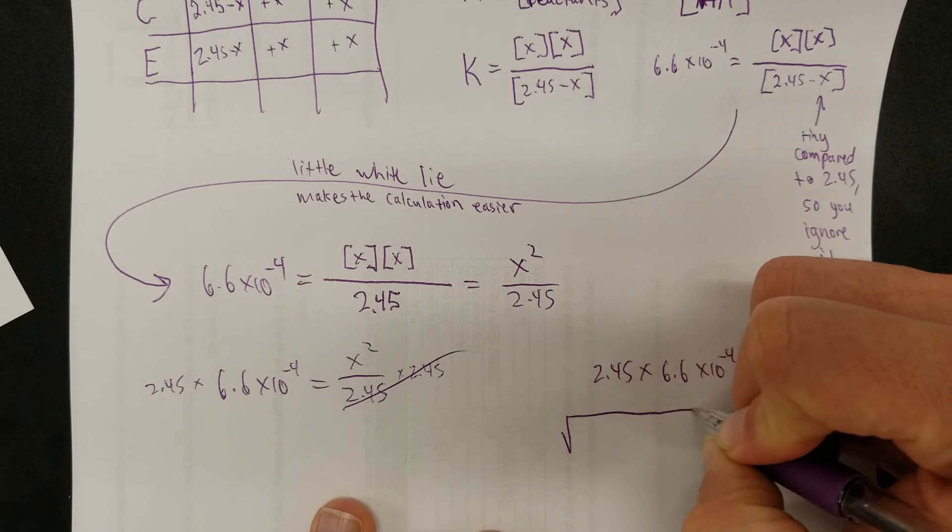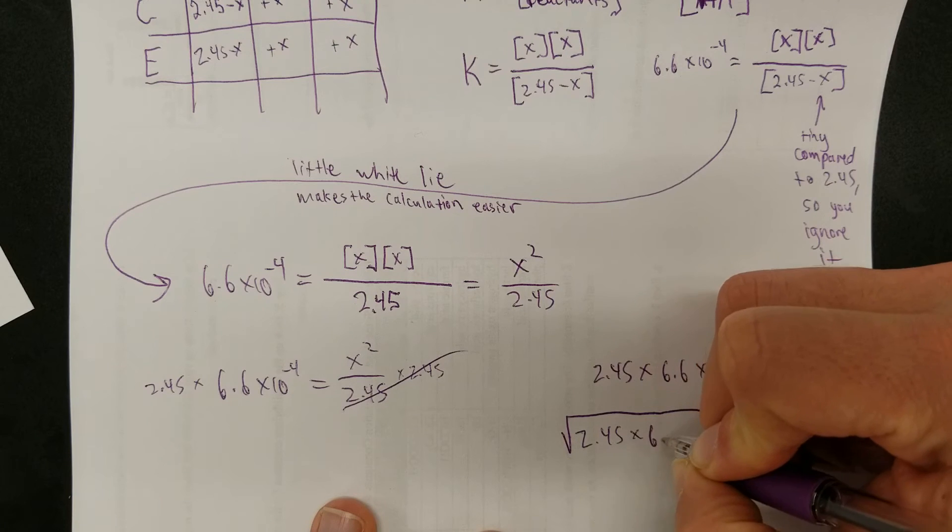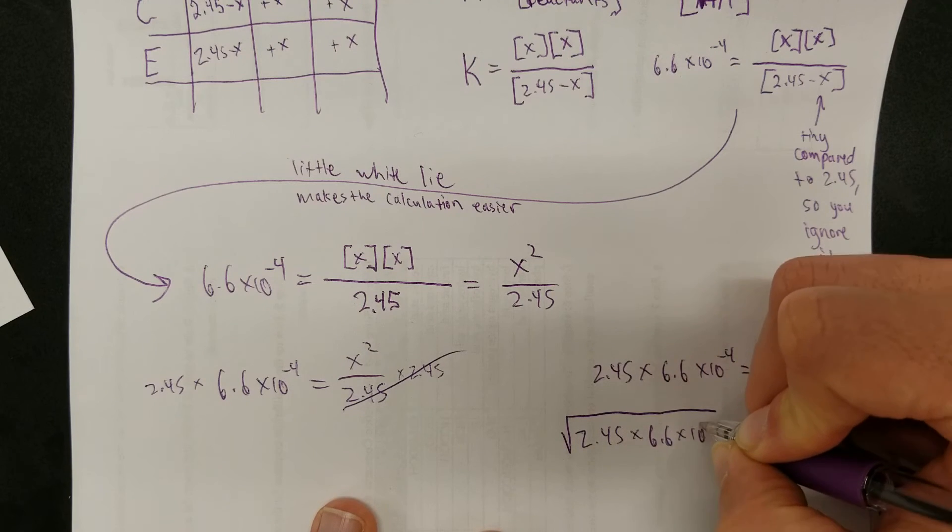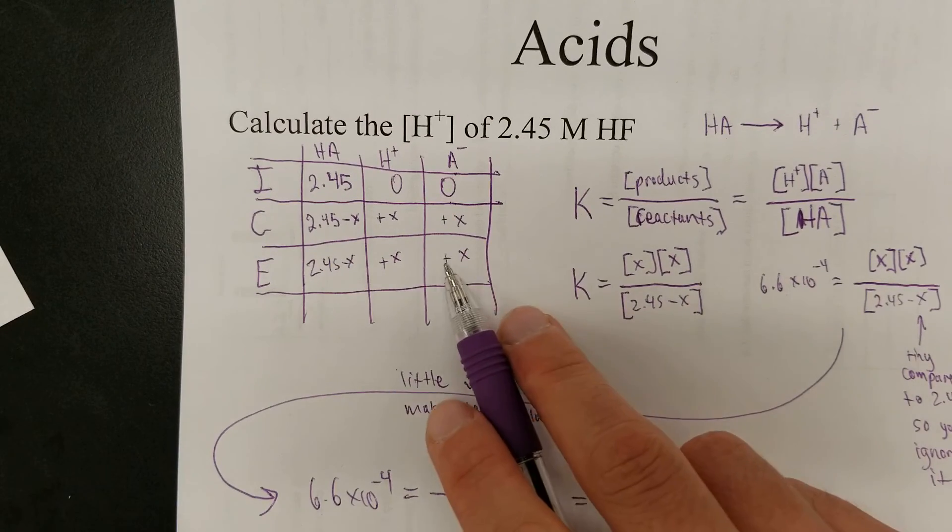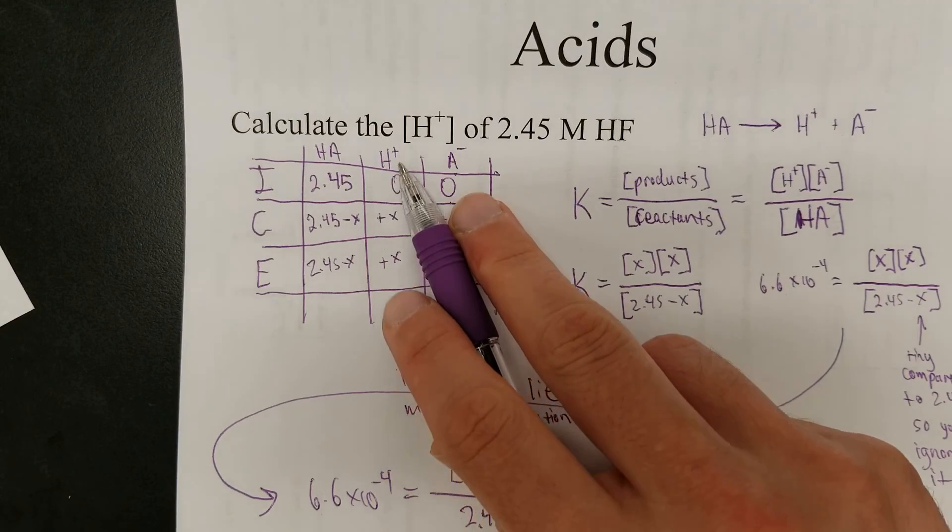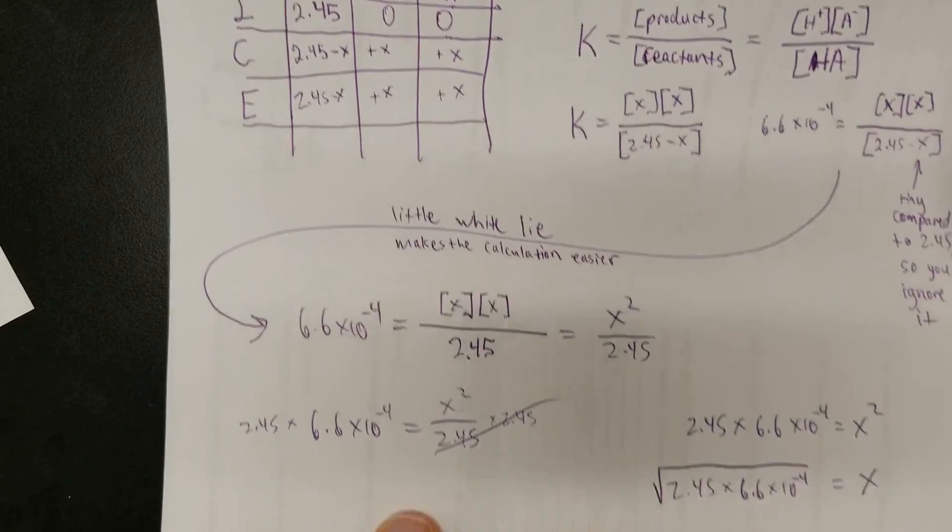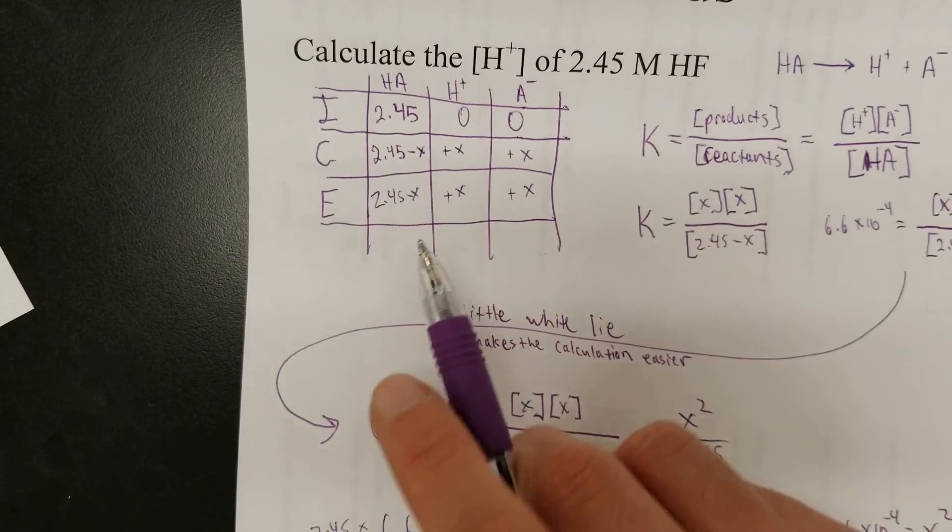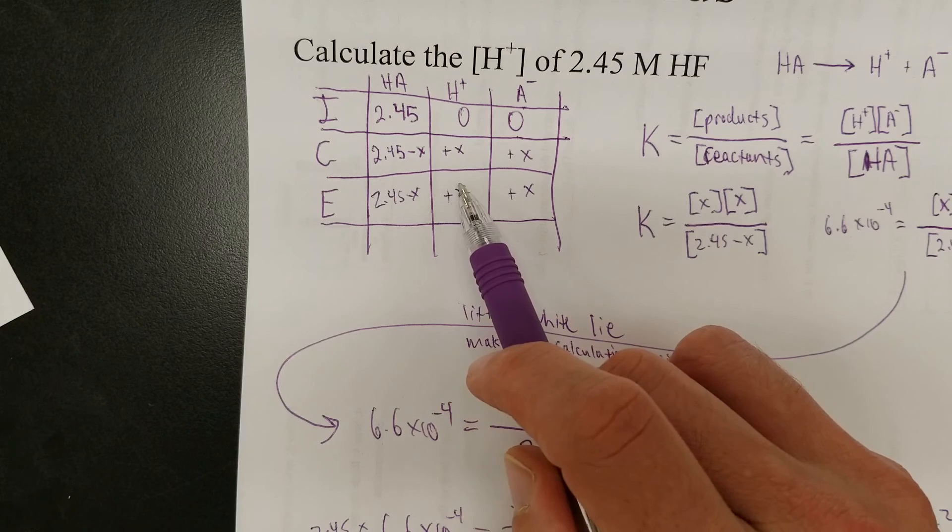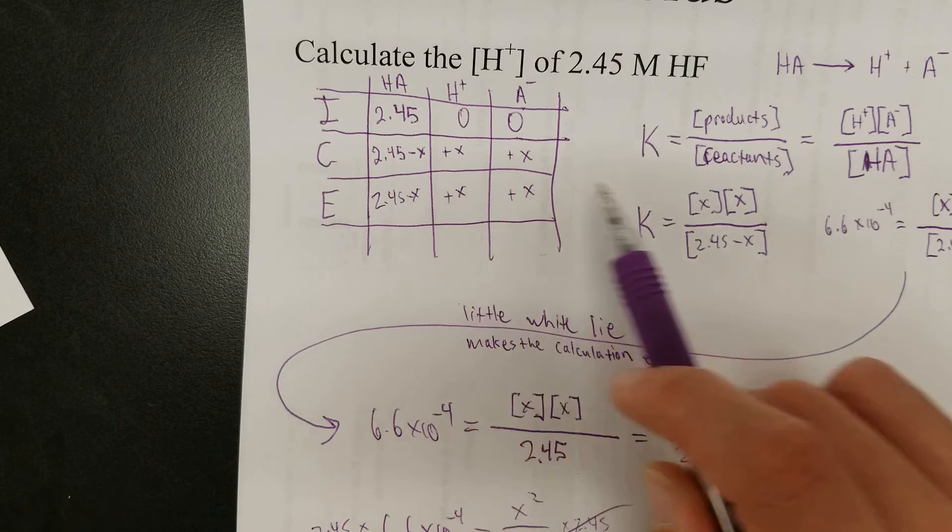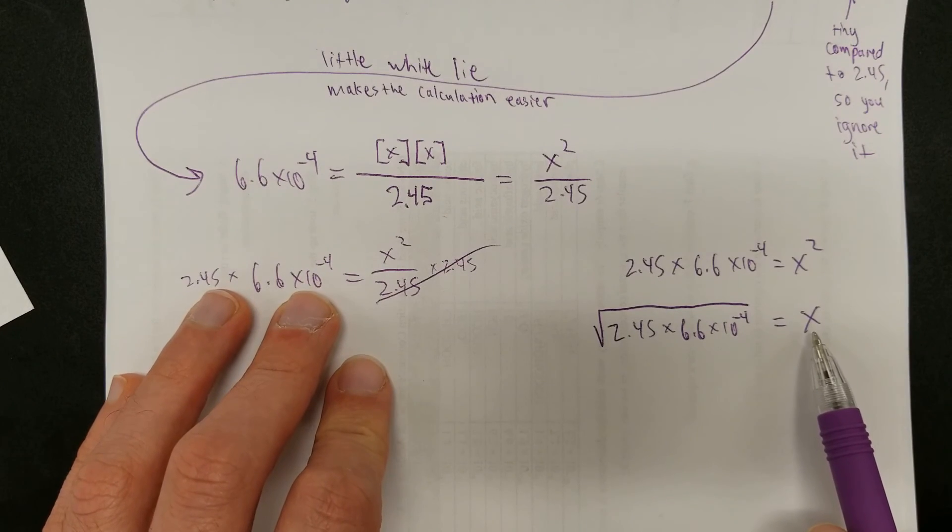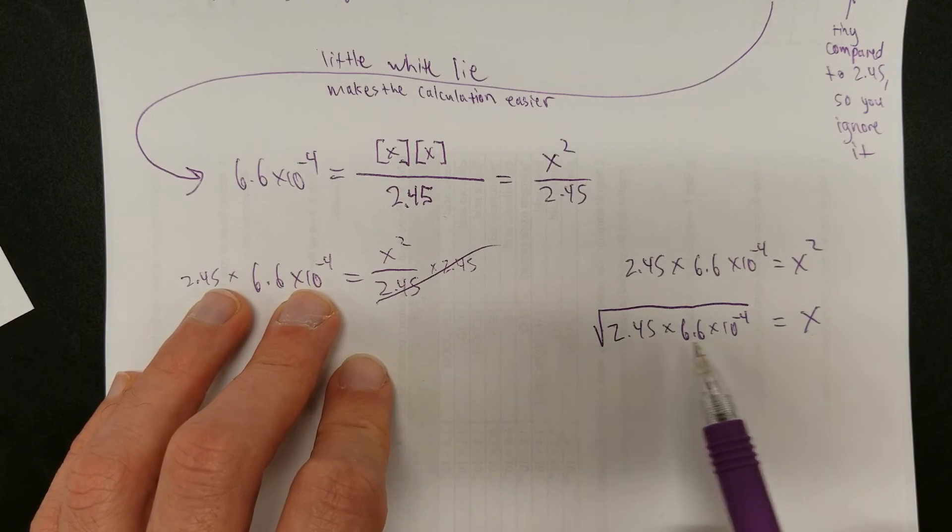So, the square root of 2.45 times 6.6 times 10 to the negative fourth is equal to X. And, again, why am I solving for X? Let's just do a quick review. Why am I doing this? Because X is the concentration of the hydrogen ion. Some amount X was released during the dissociation. Some amount X was released. That's the amount. And so, I'm solving for it to find out what hydrogen ion concentration is. This is hydrogen ion concentration right here.